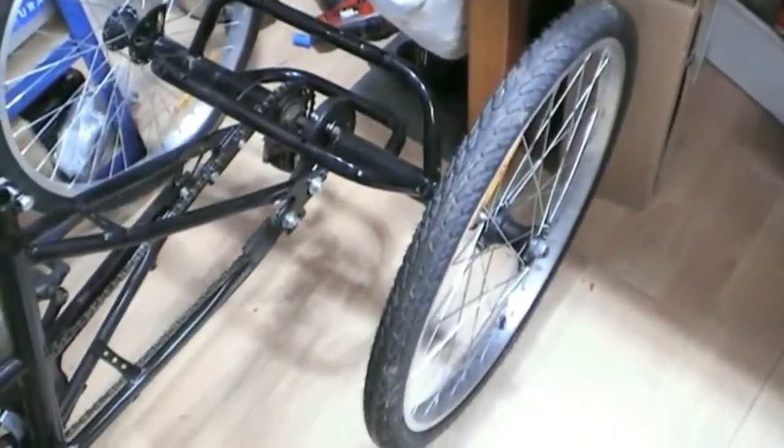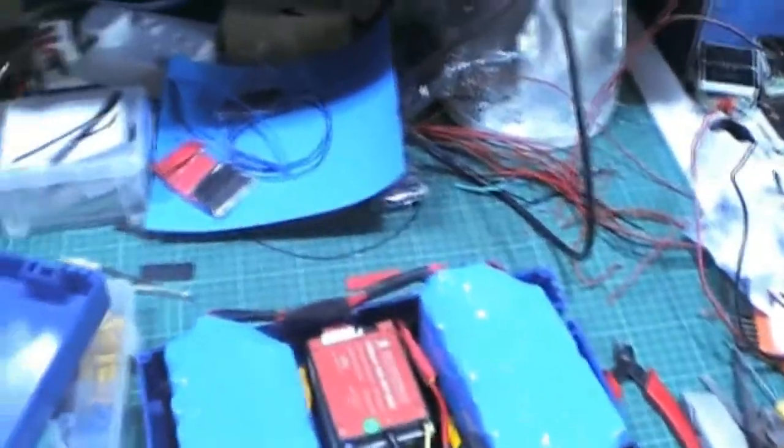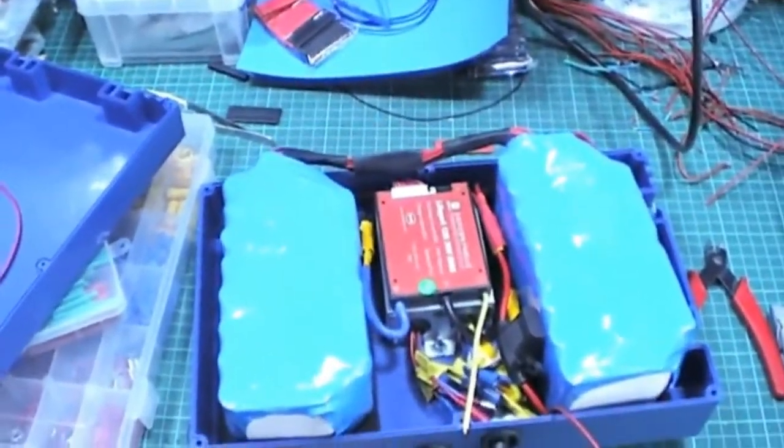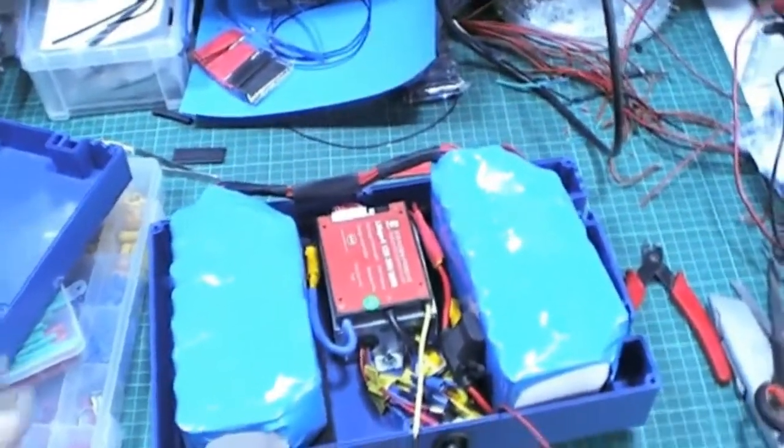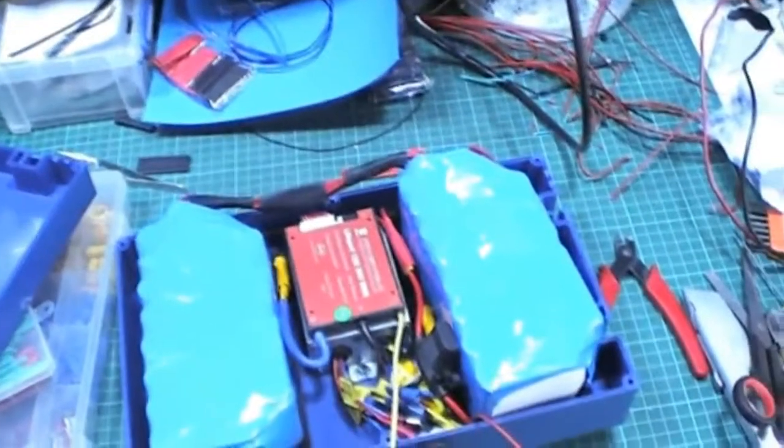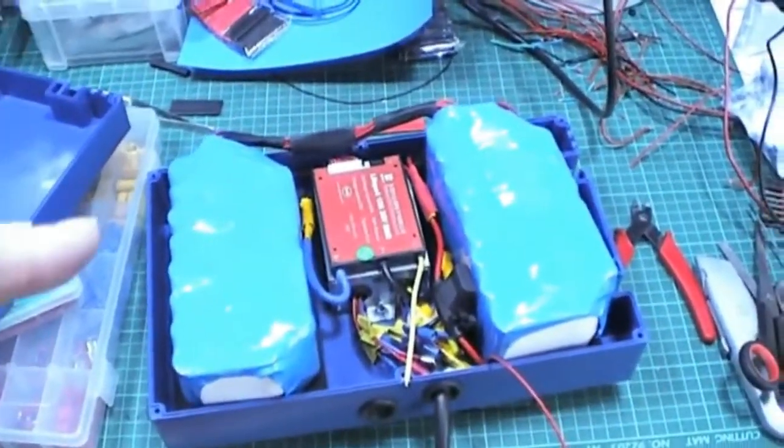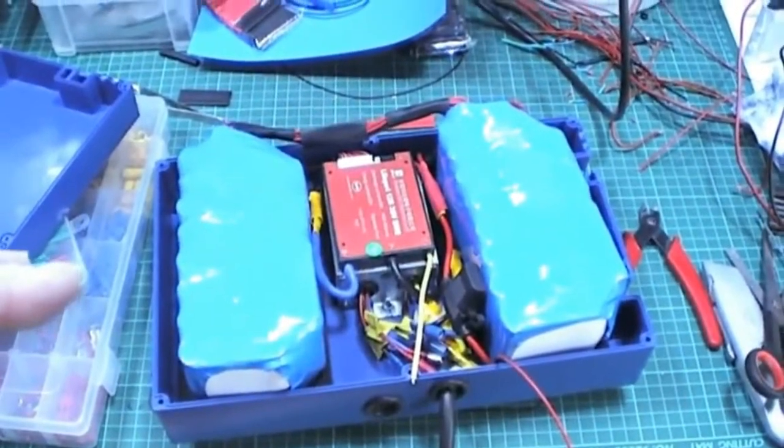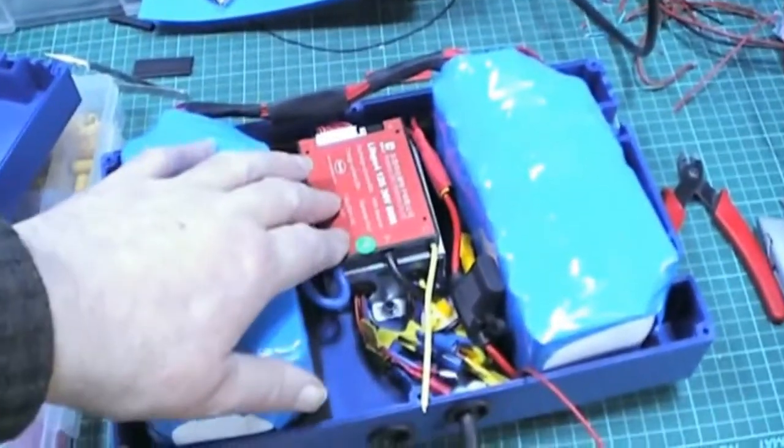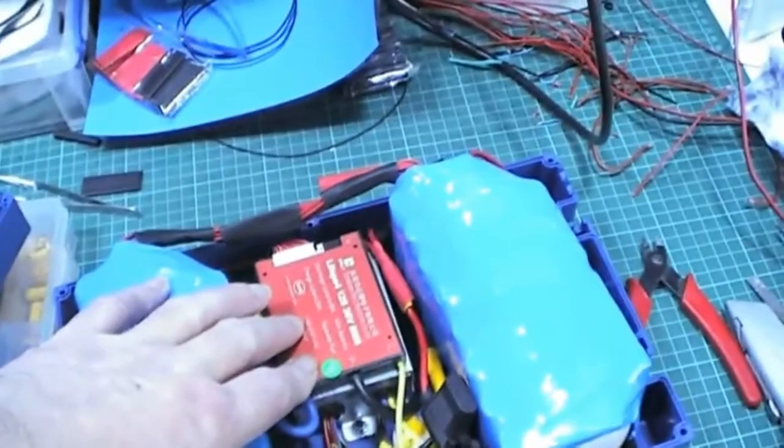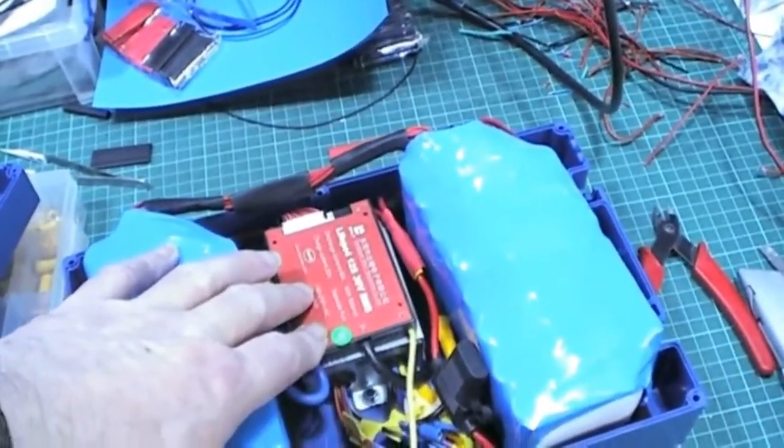Right, now over here I have the battery control box. Excuse me. They are two 36 volt packs in parallel, and this is a 12S 36 volt BMS.